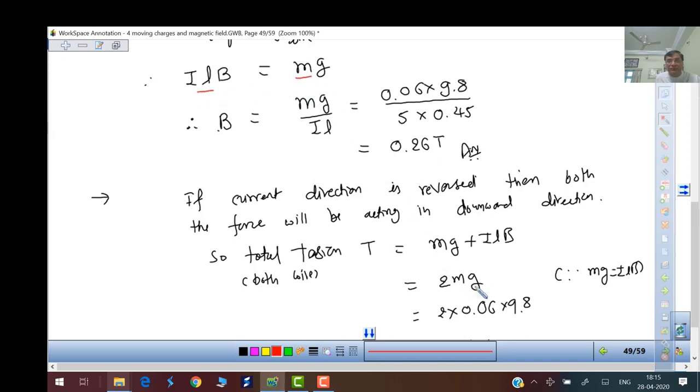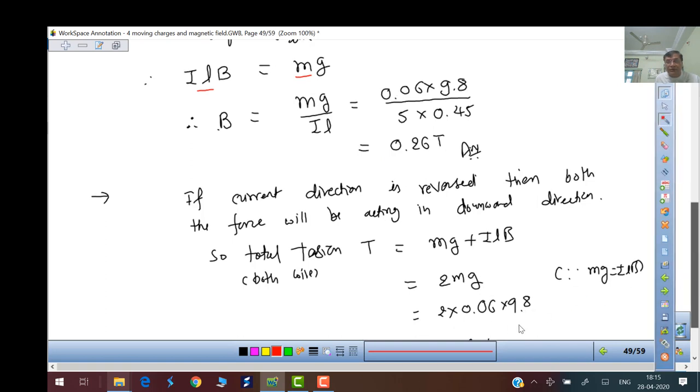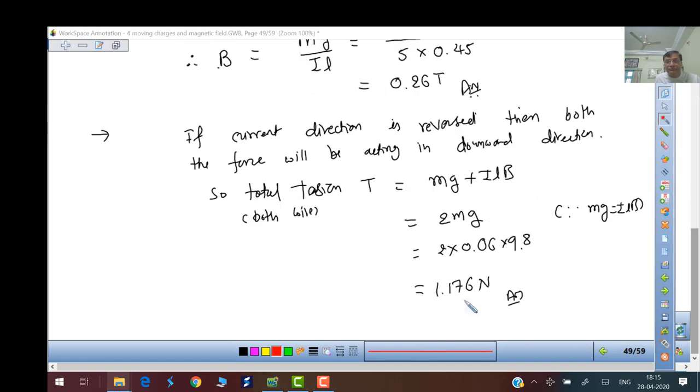Total force becomes ILB plus mg. It becomes 2mg, so 2 into mass into gravity. It comes out to be double of this, 1.176 Newton. So write down.